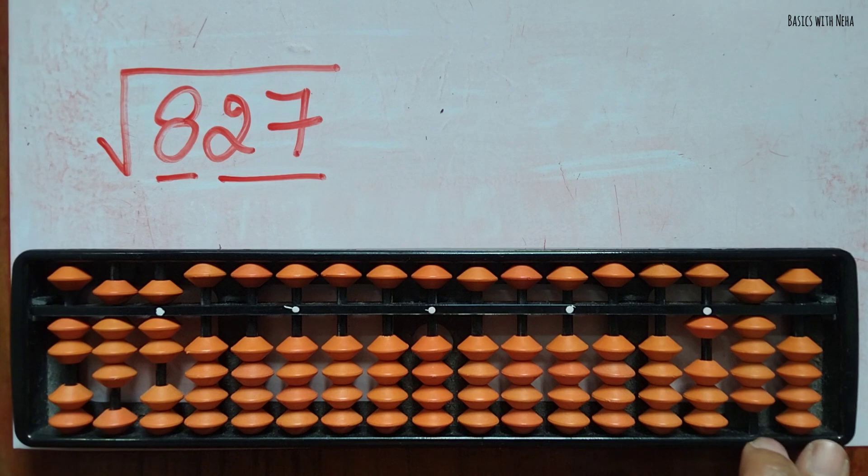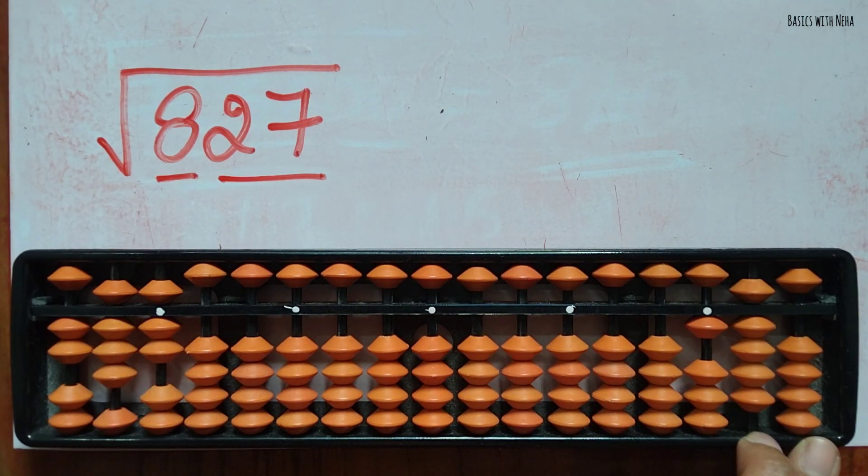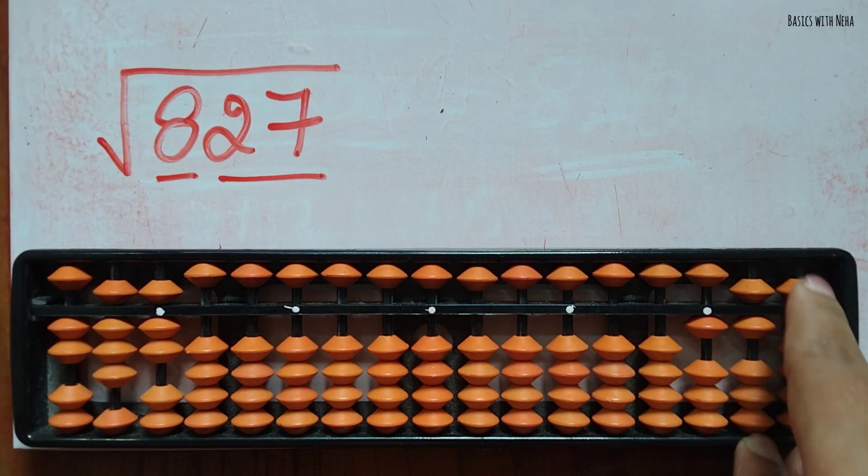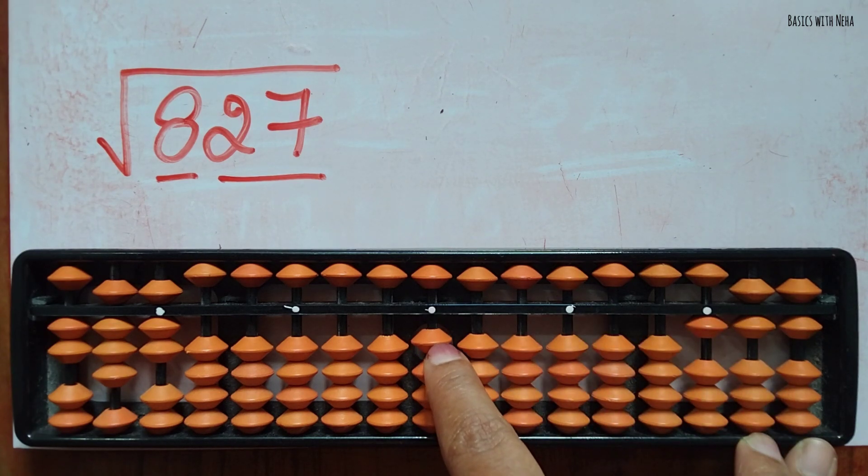Now I'm going to come to this place, 7 8, 7s are 56. Now I'm coming to this place, so here it is 7 7s are 49, 49 half, 24.5. I have to put it in the next rod, here I'll put the same numbers here.